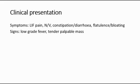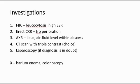Investigations for acute diverticulitis include a full blood count, where we will see leukocytosis — meaning high white blood cell level — and also high ESR due to ongoing inflammation in the colon. The second investigation is an erect chest x-ray to rule out any perforation; if there is perforation, it can show gas under the diaphragm. Third is an abdominal x-ray, where we look for ileus and air-fluid levels within an abscess.